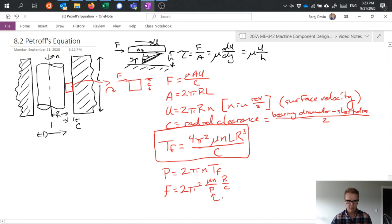This p is pressure or also radial load per unit projected area.